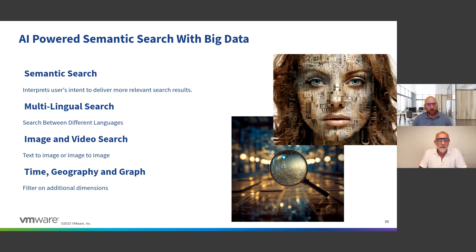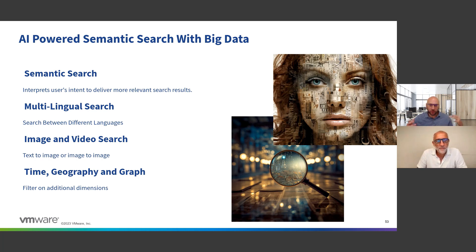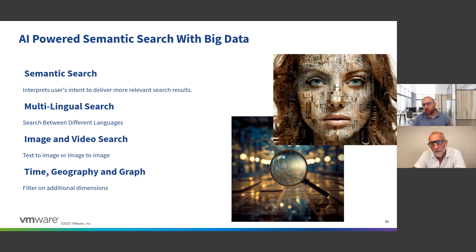Another use case: say I have a million documents in a hundred languages. I can search for certain topics in one language and it can match and find the relevant data across all languages. That's because the data goes through a transformation stage before storage, where it transforms from unstructured data into a mathematical representation that captures its meaning. By comparing these mathematical representations, we can do similarity search.